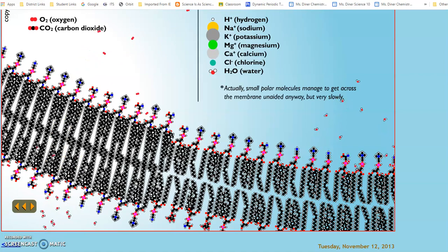Here's a list of the substances that can freely move through the phospholipid bilayer. We've got hydrogen, sodium, potassium, magnesium, calcium, chloride, and water. Some of those actually need some help to get across, and we'll be talking about those later.